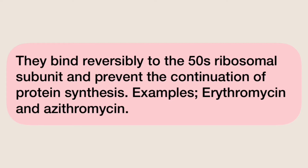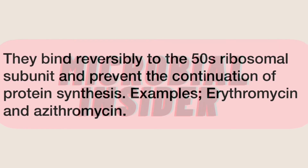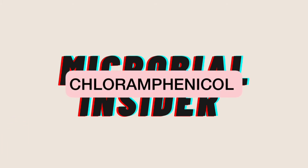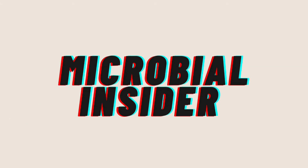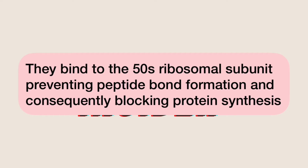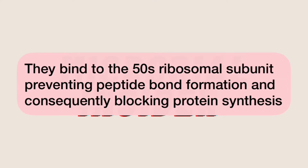Examples of macrolides are erythromycin and azithromycin. Chloramphenicol binds to the 50S ribosomal subunit, preventing peptide bond formation and consequently blocking protein synthesis.